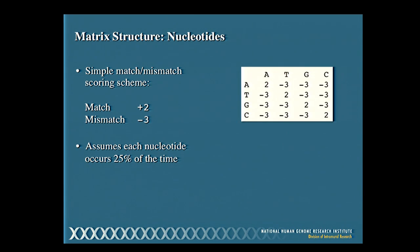On the easier side, for nucleotide-based comparisons we only have four nucleotides — A, T, G, and C — so we apply a simple match or mismatch scheme. Any position where the two nucleotides match gets a positive value; any mismatch subtracts points. In this example, a match gets two points and a mismatch loses three. The matrix shows A, T, G, C across the top and down the side; T aligned with T gives plus two — the plus twos run along the diagonal for exact matches, with minus threes in other positions. This assumes each nucleotide occurs 25% of the time.